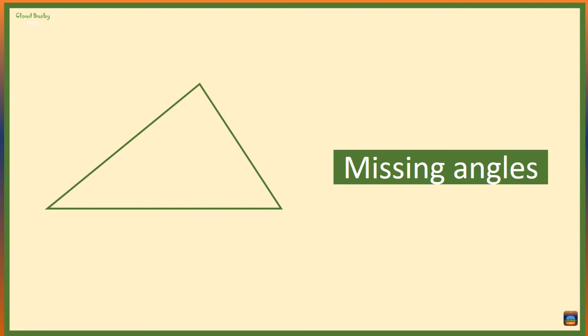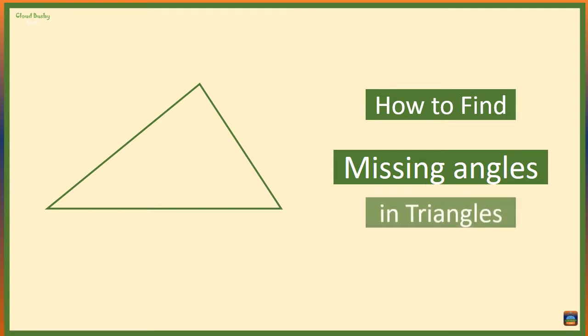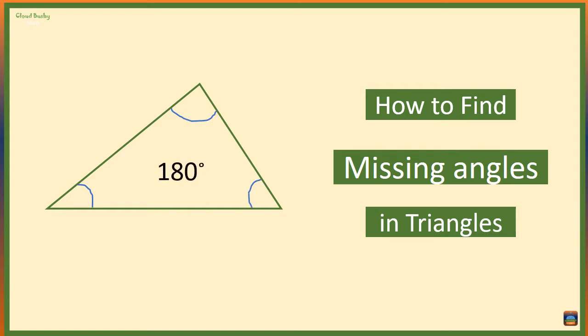Hello guys, in this video we are looking at how to find the missing angles in any triangle, keeping in mind that the sum of the internal angles of any triangle is 180 degrees.